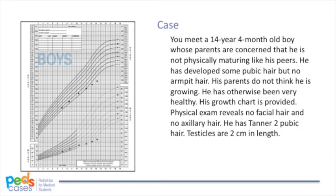Back to our case: the boy's lab results showed delayed bone age and pre-pubertal levels of LH and FSH. He appears healthy on the basis of history and physical exam, and constitutional delay of growth and puberty (CDGP) is strongly suspected. The commonly accepted management for CDGP is to wait and watch, so you provide reassurance to him and his family and arrange a follow-up in six months.